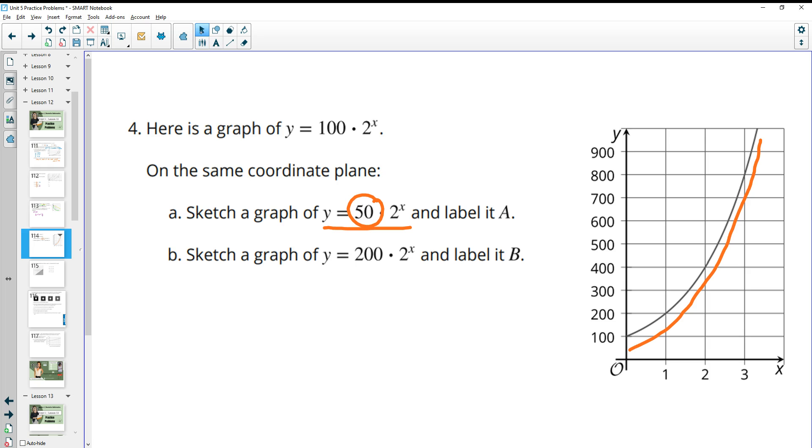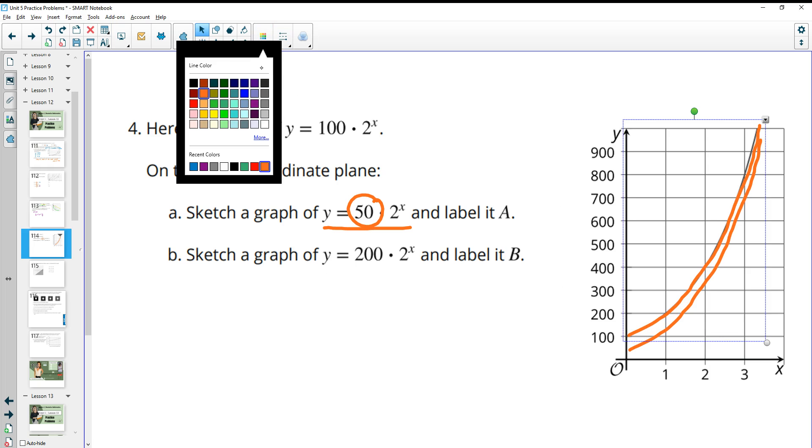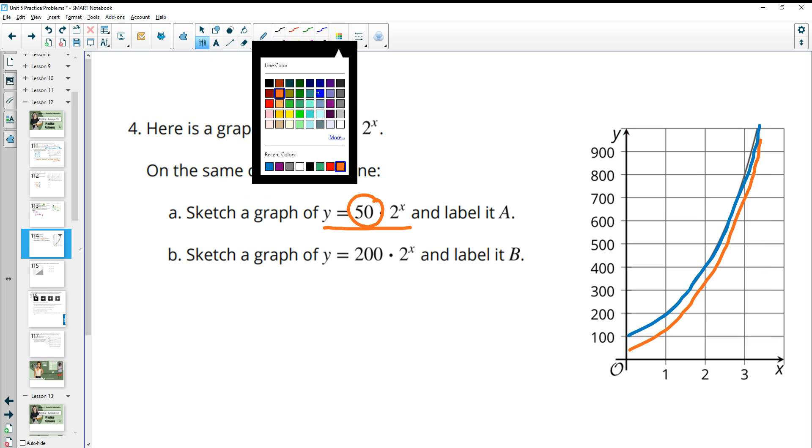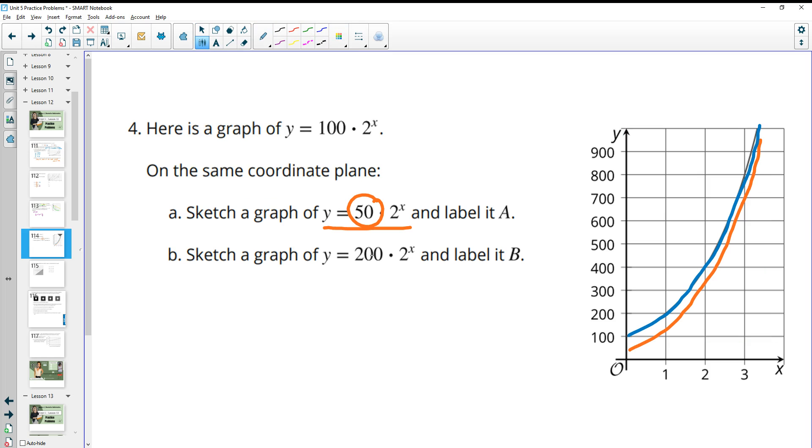Then the next one, so let me just duplicate this again. I'm going to change the color here. So this next one, the difference between this graph and this one is that this one starts at 200. Same growth factor, so it's growing at the same rate.